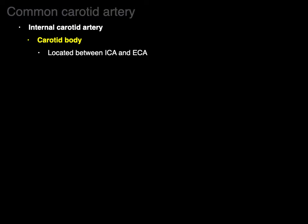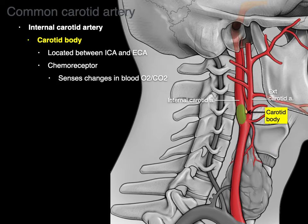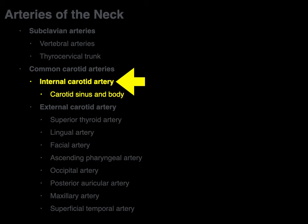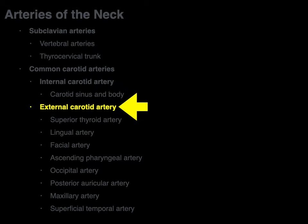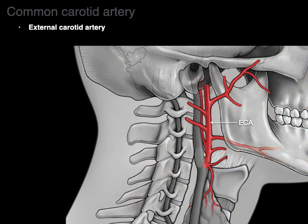The carotid body is located between the internal and external carotid arteries. It is a chemoreceptor that senses changes in blood oxygen and blood carbon dioxide levels. Now let's go to the external carotid artery and its associated branches. The external carotid artery supplies the neck and the face, with many branches in this region.